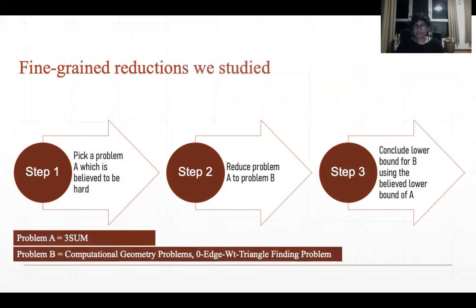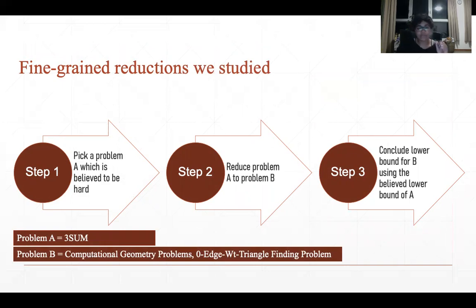To summarize: we pick problem A, which is believed to be hard; we reduce problem A to problem B; then we conclude a lower bound for problem B using the believed lower bound from problem A. For the purpose of this talk, we pick problem A to be the 3SUM problem, and we end up proving conditional lower bounds for computational geometry problems and the zero edge weight triangle finding problem.